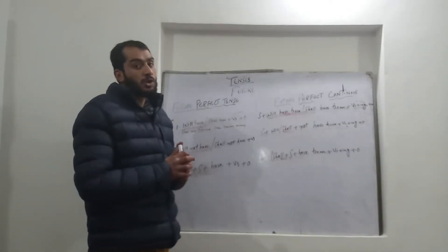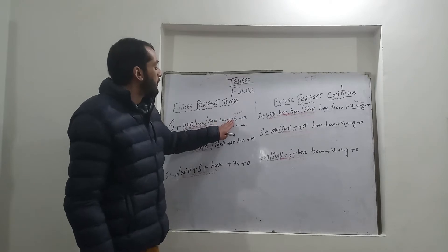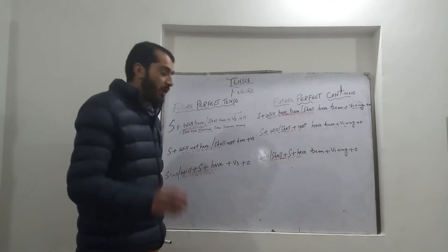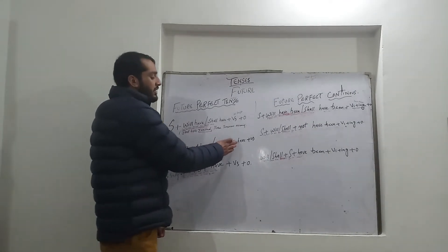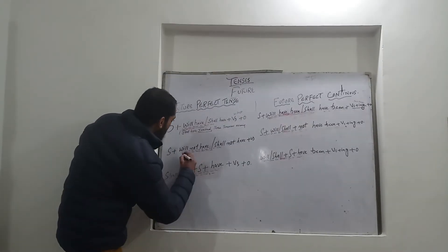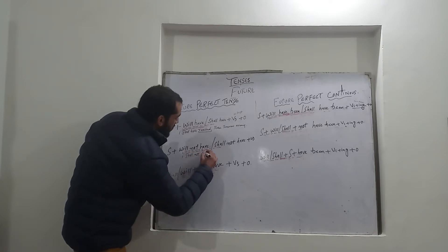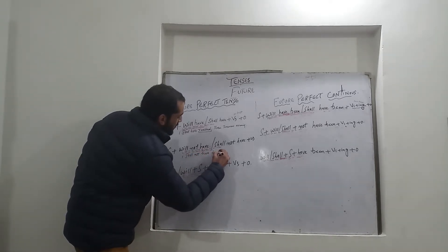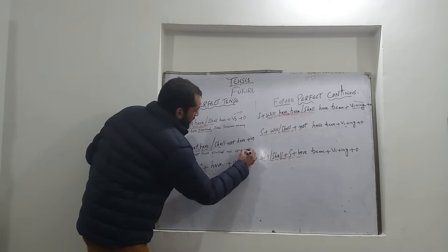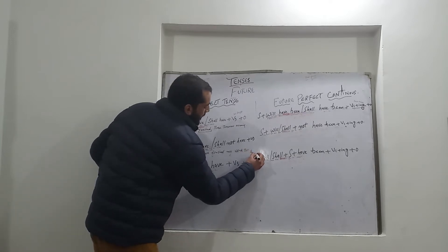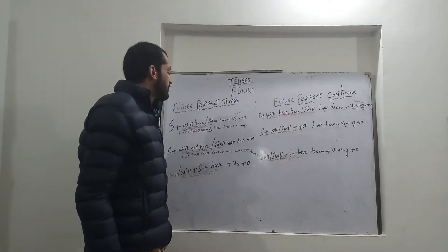Remember the structure for positive sentences: subject plus will have or shall have plus past participle of verb plus object. For negative sentences: subject plus will not have or shall not have plus verb third form. For example: I shall not have finished my work till tomorrow.